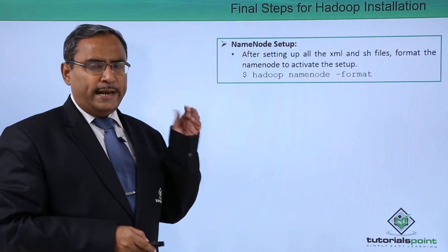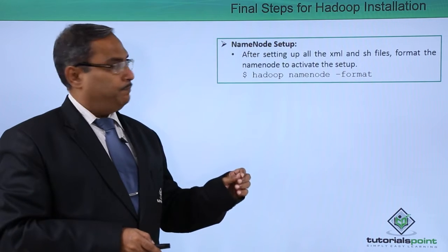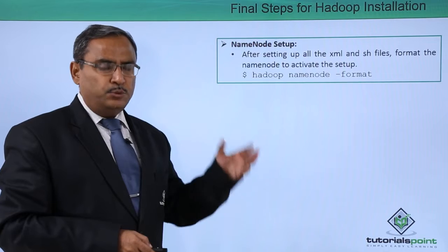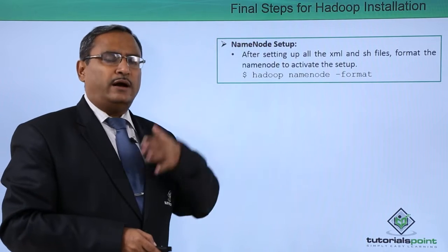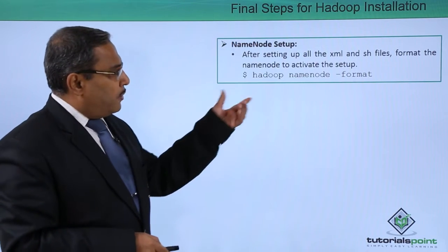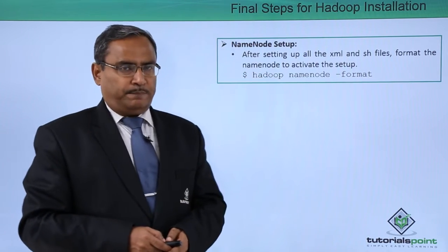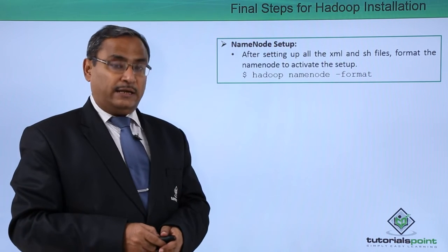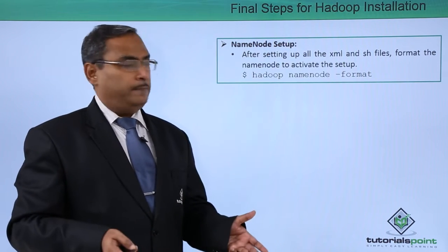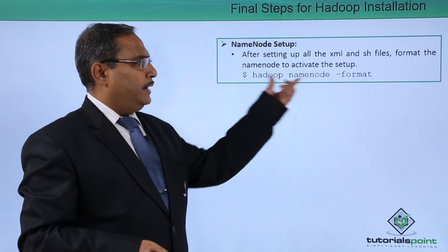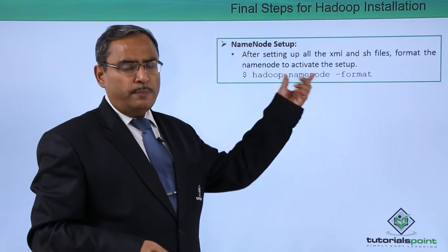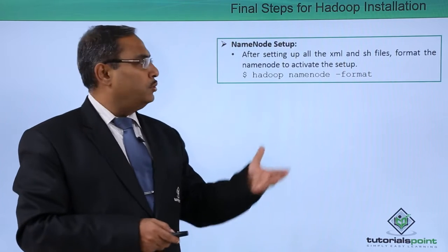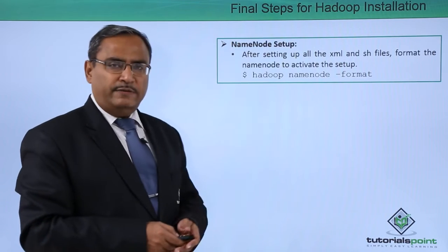First, we are going for name node setup. After setting up all the XML and SH files which we have shown in the earlier videos, format the name node to activate the setup. The command is: hadoop namenode -format. You are supposed to issue this command to format the name node and activate the setup.